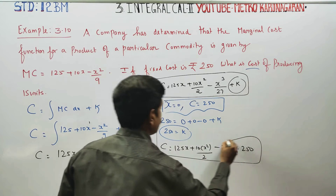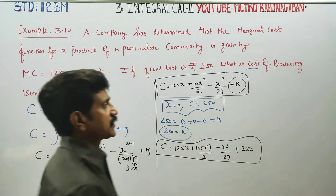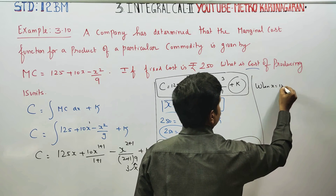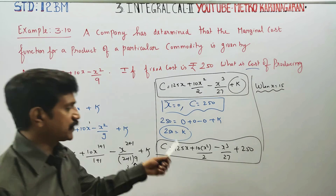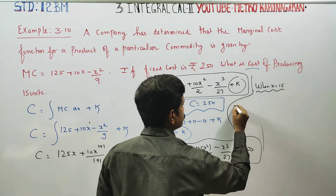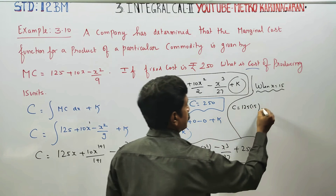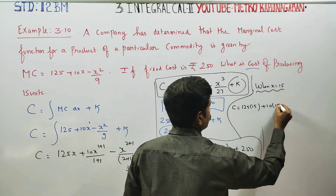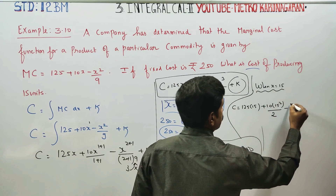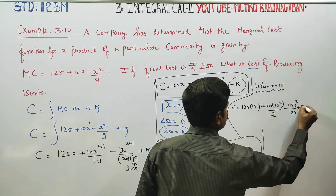The cost function is ready. Now we need to find the cost for 15 units. When x is equal to 15, substitute into the cost formula: C equals 125 into 15, plus 10 into 15 squared by 2, minus 15 to the power 3 by 27, plus 750.